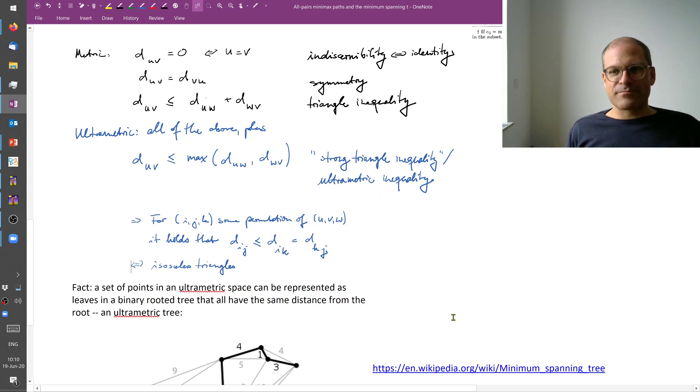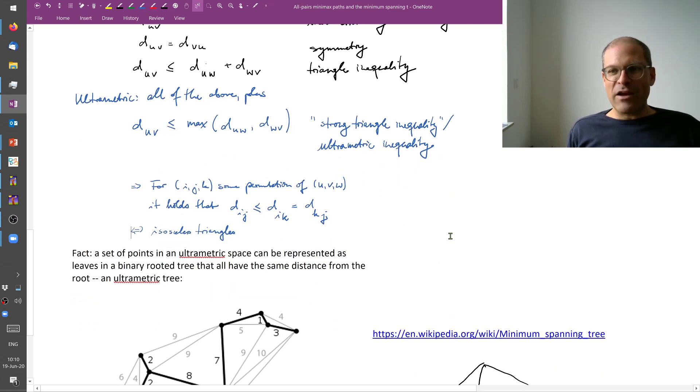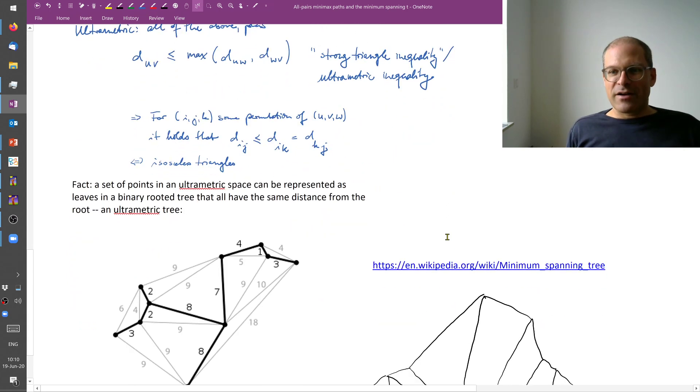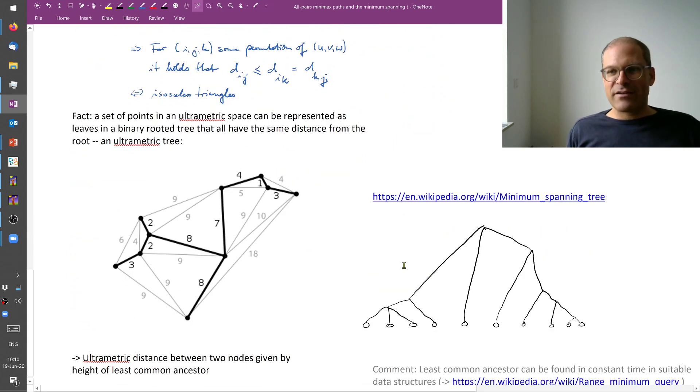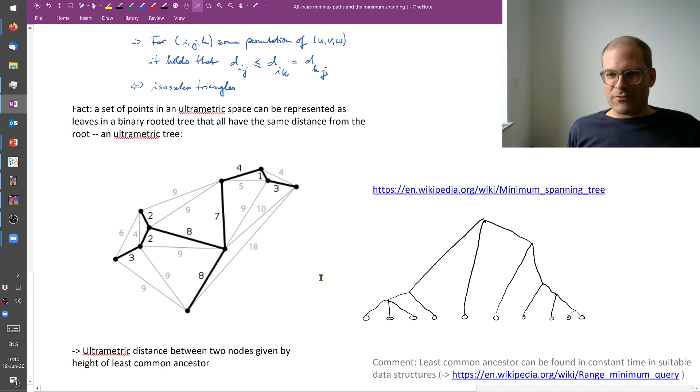And why do we care? Because whenever we have an ultrametric, that means we can find a nice hierarchical description of such data. So a set of points with ultrametric distances between them, they can be represented as leaves in an ultrametric tree. An ultrametric tree is one in which all leaves have the same distance from the root.